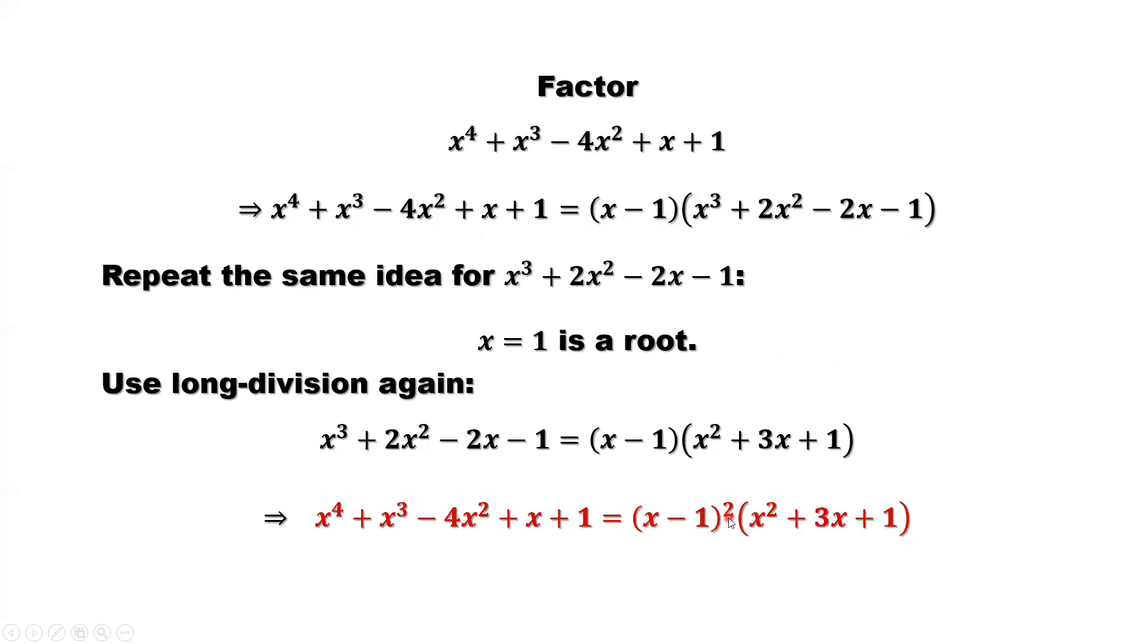So here the final result for x to the power of 4 plus x to the power of 3 minus 4x squared plus x plus 1 equals x minus 1 squared times x squared plus 3x plus 1. This is for the first method.